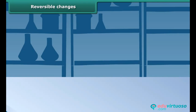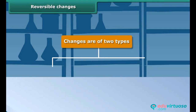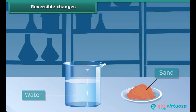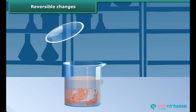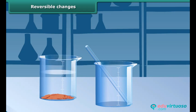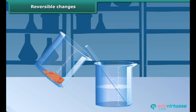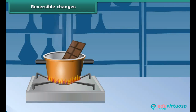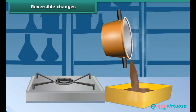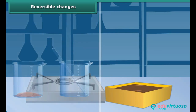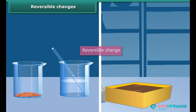Reversible changes. Changes are of two types: reversible and irreversible. Changes that can be reverted to their original state are reversible changes. Take some sand and mix it in water — would you be able to remove sand from water after they are mixed together? Also, melt a chocolate bar to liquid. Do you think you can solidify the same liquid to be a chocolate bar again? These are examples of reversible change.